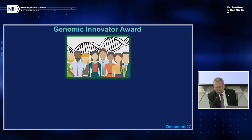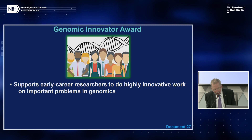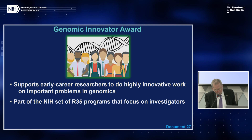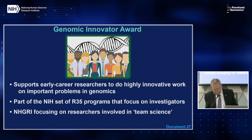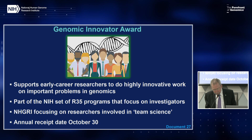The Genomic Innovator Award is a new NHGRI program designed to support early-career researchers to do highly innovative work on important problems in genomics. Unlike traditional project-based NIH awards such as the R01, this award takes a people-based approach using R35 funding, focusing on individual researchers rather than specific projects. NHGRI is focusing on genomicists who start their careers in consortia or other team science efforts. To be eligible, applicants must be early in their careers, have demonstrated potential to make important contributions to genomics, have a history of being major participants in consortium or group efforts, and must propose work within NHGRI priority areas. The annual receipt date for applications will be October 30th, starting this year.